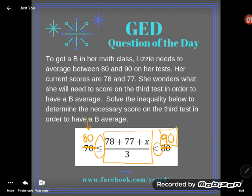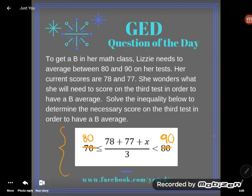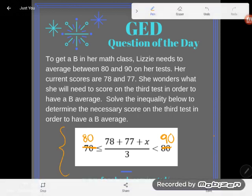Her current scores are 78 and 77. She wonders what she will need to score on the third test in order to have a B average. Solve the inequality below to determine the necessary score on the third test. I know a lot of students start feeling overwhelmed when they see a word problem, freak out even more when they see algebraic equations or inequalities.